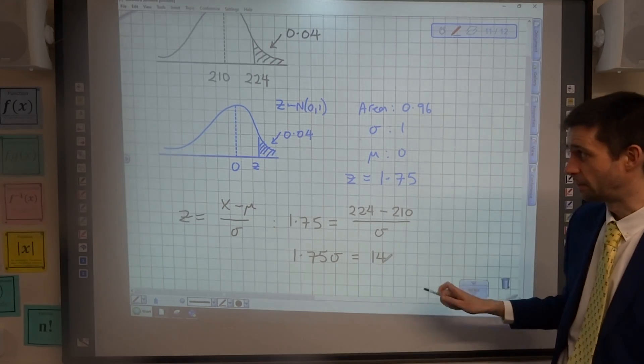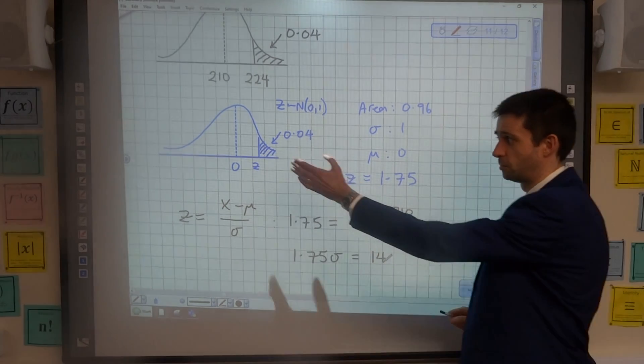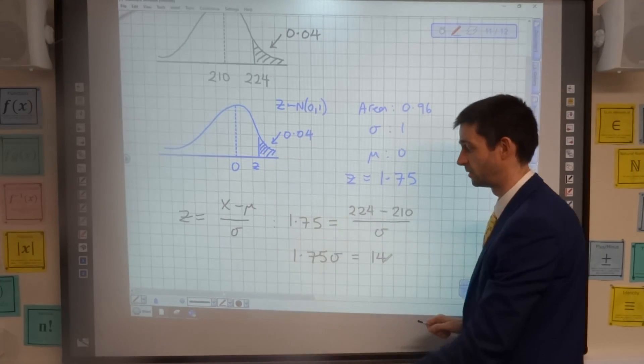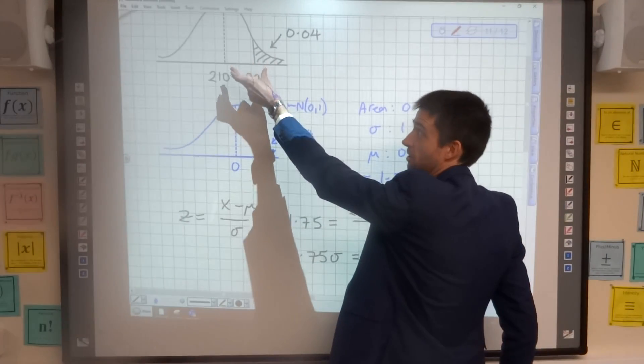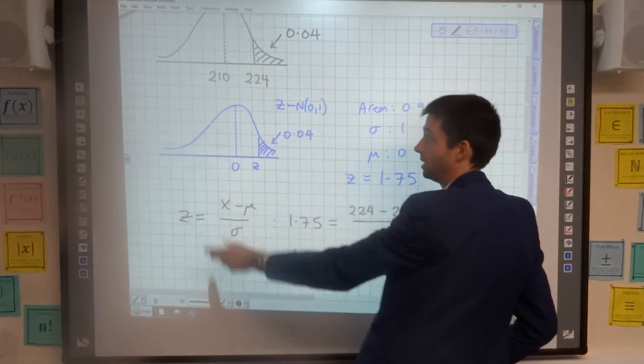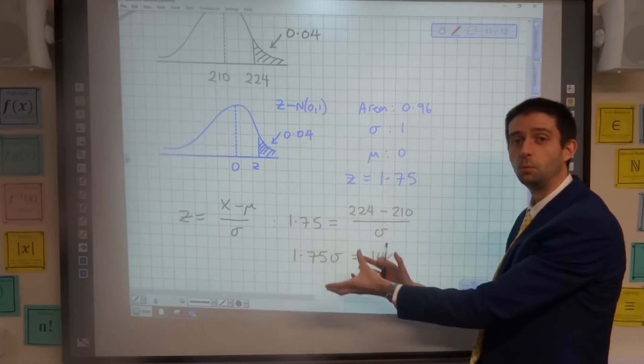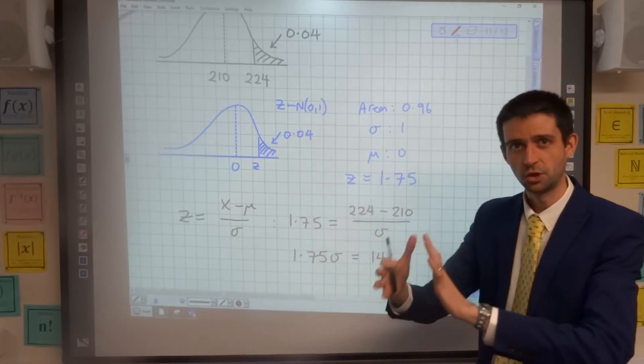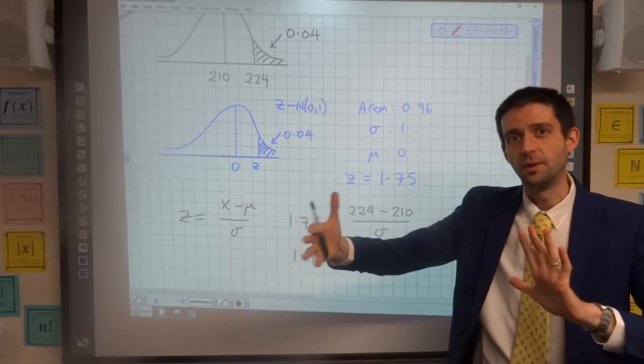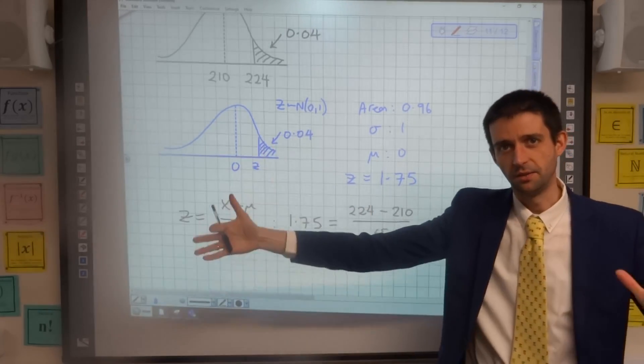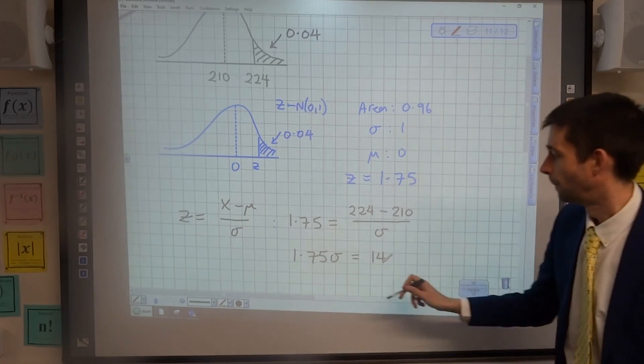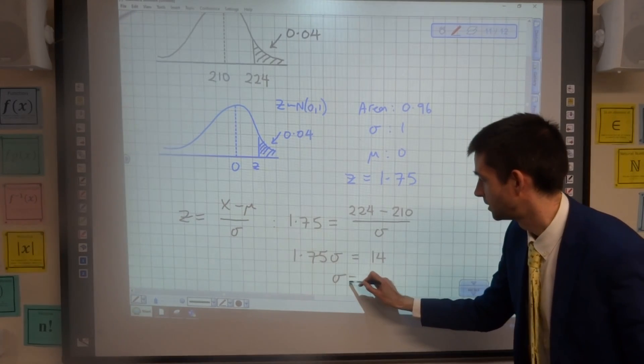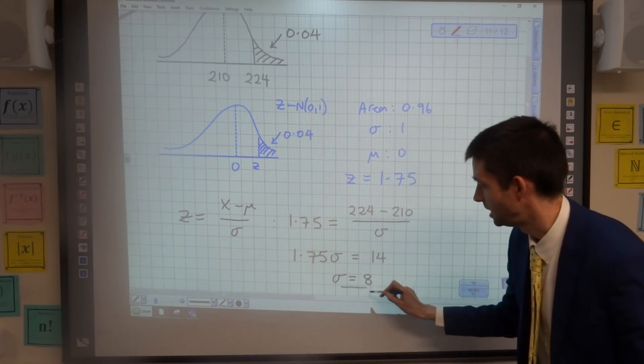Just before I solve it, I'm going to pause there a minute because I said that it's 1.75 standard deviations above the mean. It's a distance of 14 above the mean. So that gap of 14 must be 1.75 standard deviations because all normal distributions are attributed the same way in terms of where their standard deviation is planning. So if I solve that, you get your standard deviation to be 8.